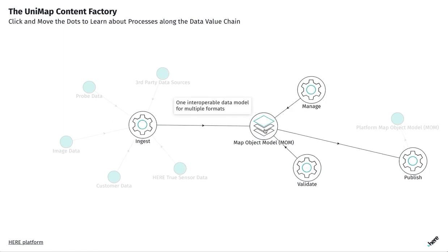And third, Unimap is built on an interoperable data model that makes it easy to open the Unimap mapping system for customer co-creation and bring your own data use cases. The data model contributes to Unimap by allowing for easy integration of data from a variety of sources, which helps to create a more comprehensive and accurate map.